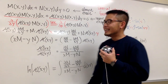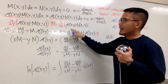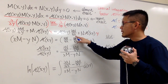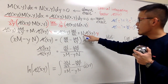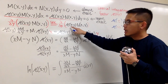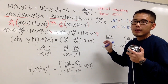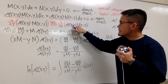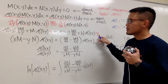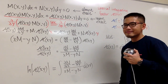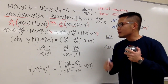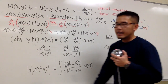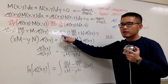For the right-hand side, same approach: partial with respect to x using the product rule. Keep mu and multiply by partial N with respect to x, then add N multiplied by mu prime of xy times y — because the derivative of xy in the x world is just y. So now we have both sides expressed in terms of mu prime of xy and mu of xy.